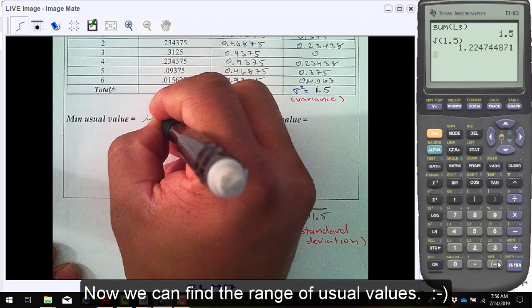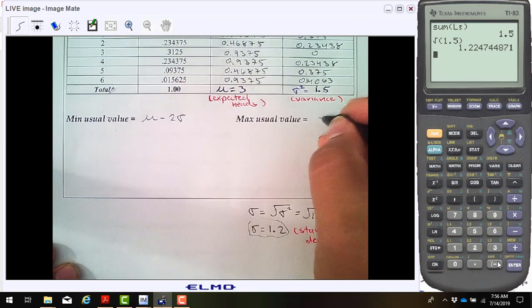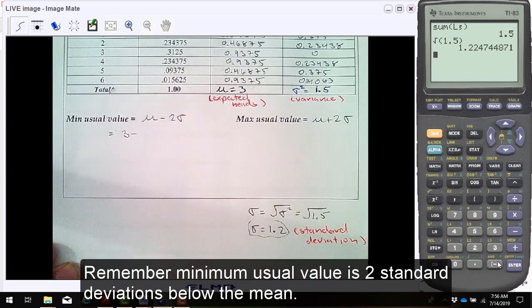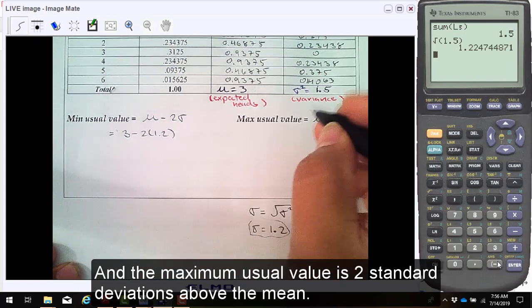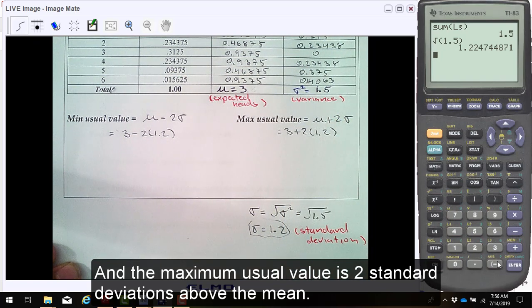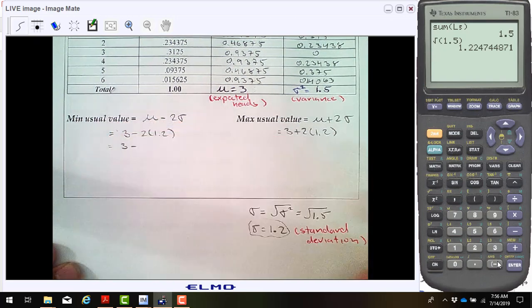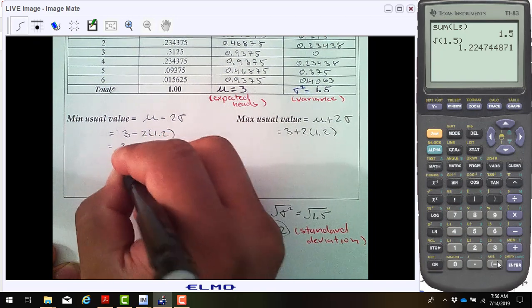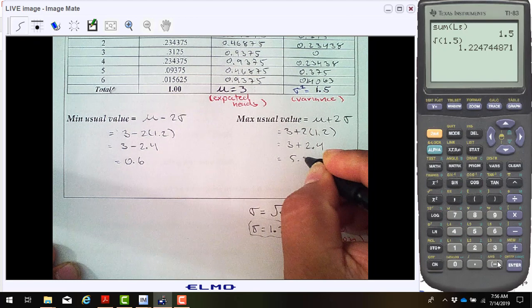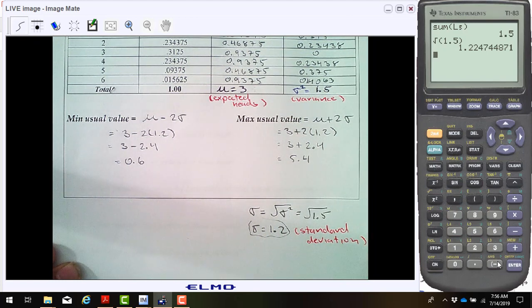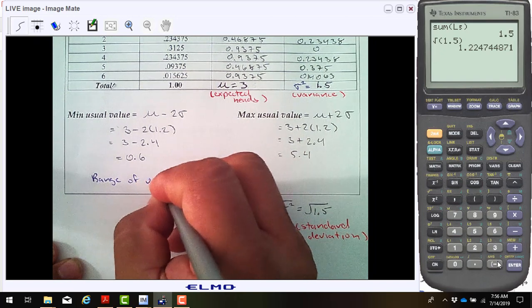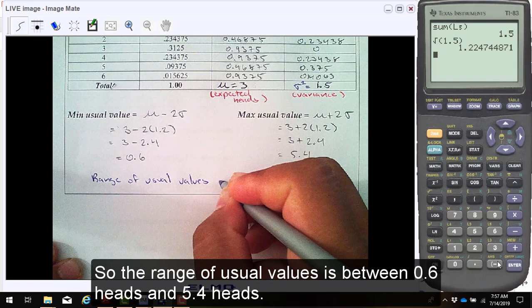Now we can find the range of usual values. Remember minimum usual value is two standard deviations below the mean, and the maximum usual value is two standard deviations above the mean. So the range of usual values is between 0.6 heads and 5.4 heads.